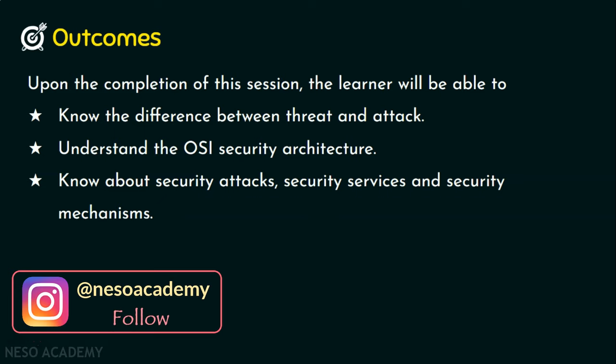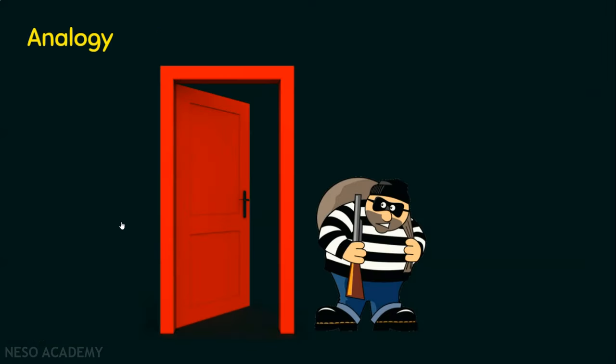Before we step into what is threat and attack, let's see an analogy. Contemplate that you want to protect your home and your belongings from unauthorized access. Obviously, you will prefer a strong lock. If you prefer a lock made of plastic, it can protect to some extent, but not to the extent of security offered by a metal lock. Plastic locks can offer some degree of security — maybe kids can't break it easily. So you understand there is a threat with the plastic lock because it can be easily broken. You have decided to replace it with a metal lock, which is harder to break.